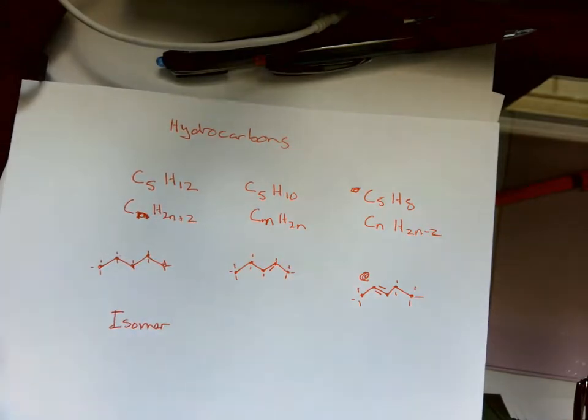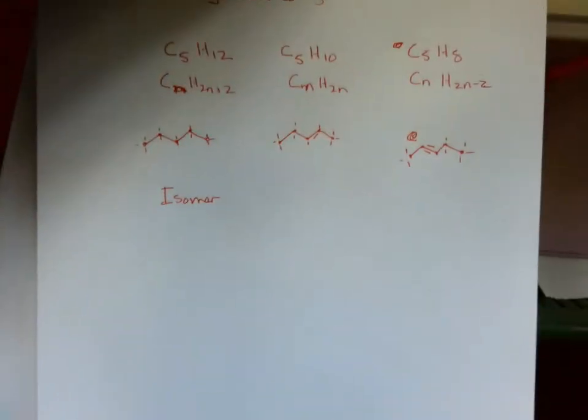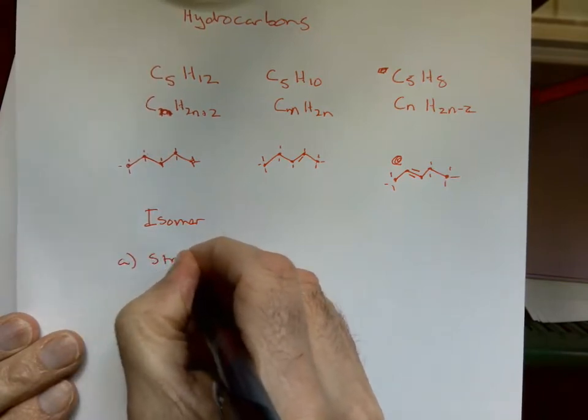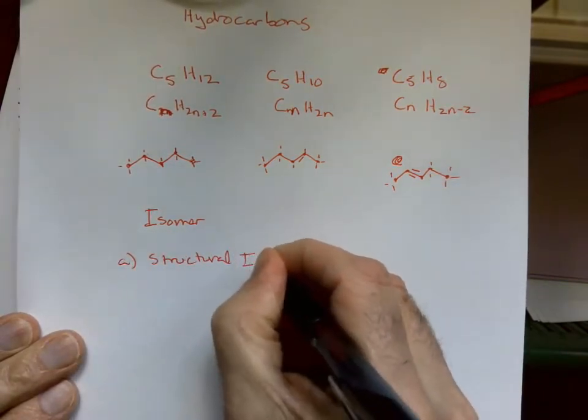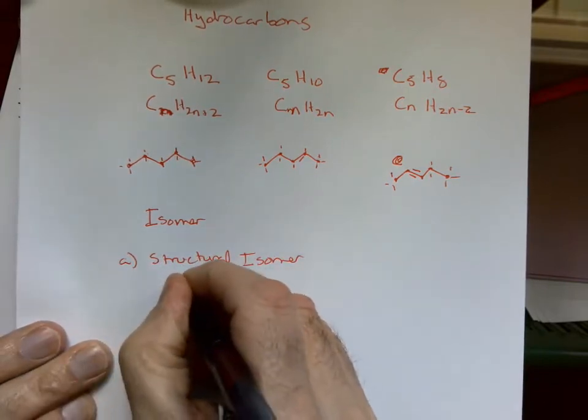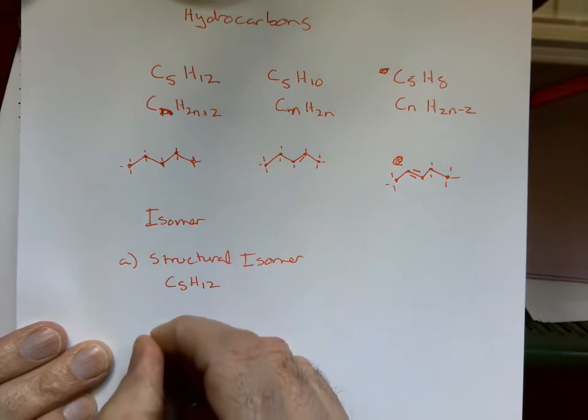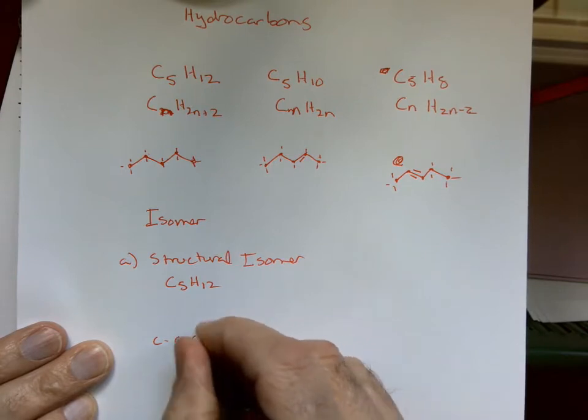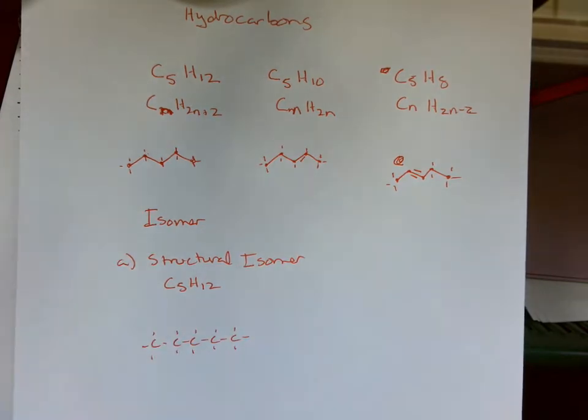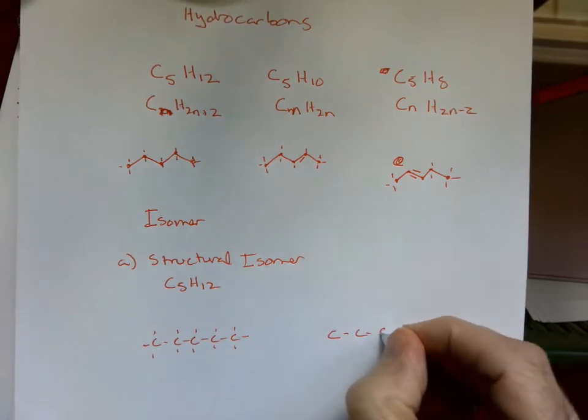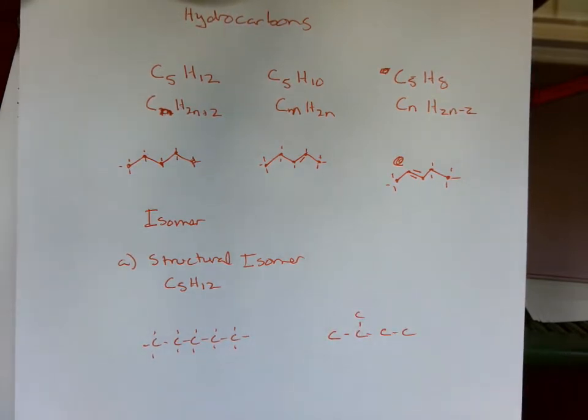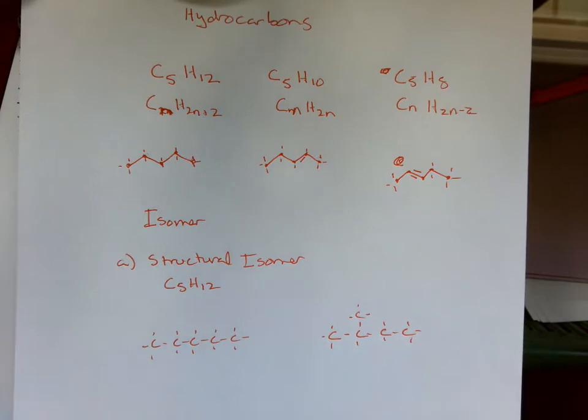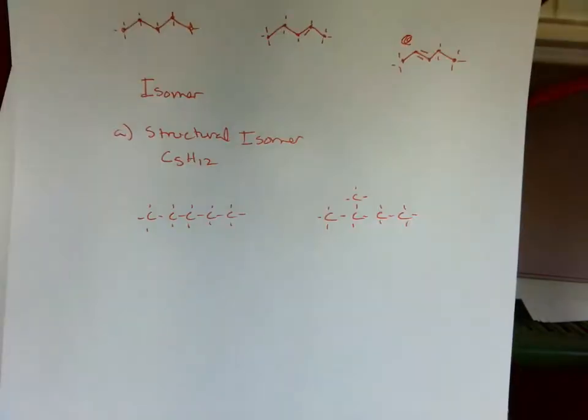The first type of isomer we're going to talk about is a structural isomer, and this is the most prevalent type of isomer. Let's go with C5H12. I'm just going to draw carbons here. If we were to draw a carbon chain with C5H12, it could look like this. But what about this? If we move the one carbon and put it up here, it's still C5H12. If you count all your hydrogens, this is an isomer, different form of the same molecule.